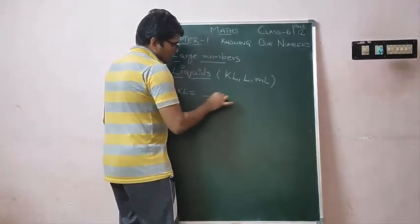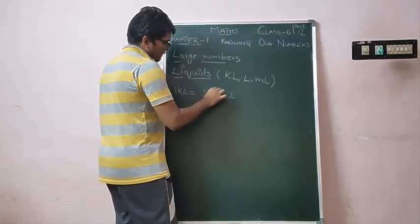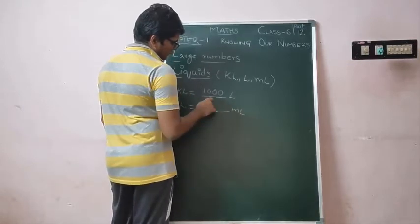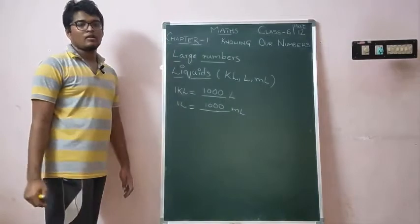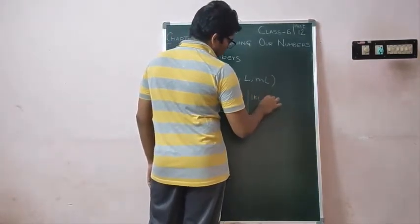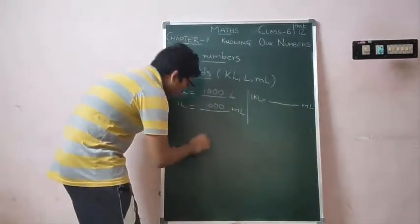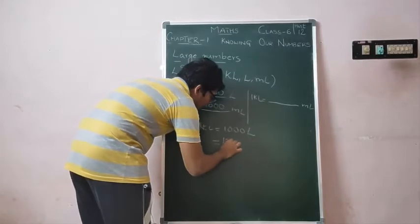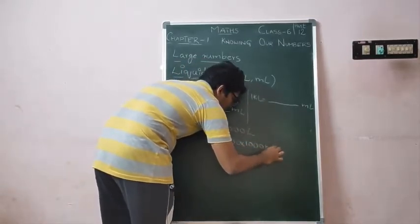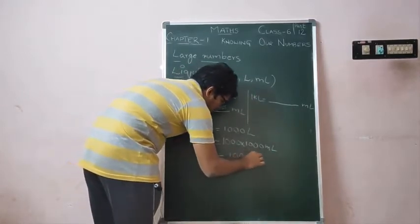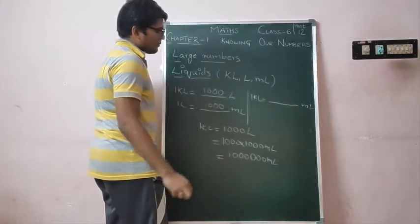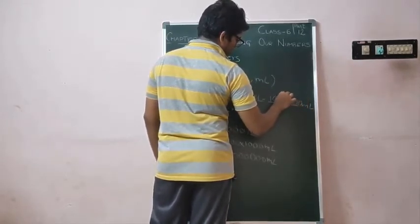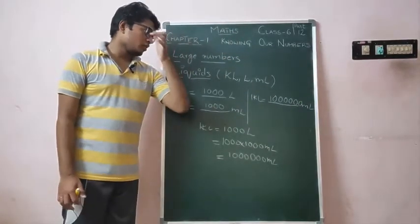Now, one kiloliter is equal to how many liters? One kiloliter is equal to 1000 liters. So now, one liter means how much? This becomes 1000 liters.